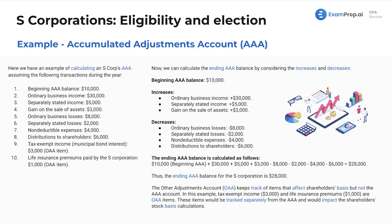Here's a calculation example for the S Corp's AAA account. We have all the following transactions and beginning balances. We calculate the ending AAA balance by considering increases and decreases. The base formula is: beginning + additions − subtractions = ending. Starting with a $10,000 beginning AAA balance, we increase it by ordinary business income, separately stated income, and any gains on the sale of assets, and we reduce it by ordinary business losses, separately stated losses, non-deductible expenses, and distributions to shareholders. The ending AAA balance calculated is $28,000.